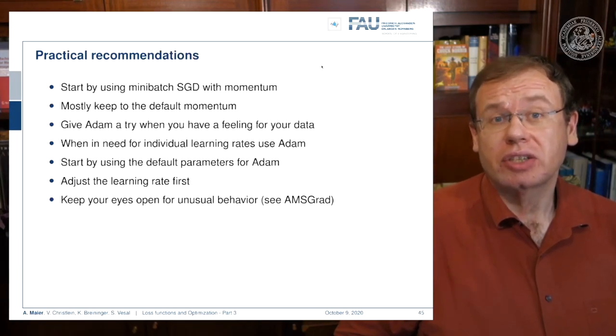Some practical recommendations: start by using mini-batch stochastic gradient descent with momentum. Stick to the default momentum. Give Adam a try when you have a feeling for your data. When you see that you need individual learning rates then Adam can help you with getting better or more stable convergence. You can also switch to AMSgrad which is an improvement over Adam. Of course start adjusting the learning rate first and then keep your eyes open regarding unusual behavior.